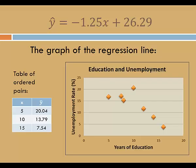Here's the scatter plot of education and unemployment. Let's plot the first ordered pair. Let's also plot the last ordered pair, 15 and 7.54. Draw a line through the two points. And now we have a graph of the regression line over the scatter plot.